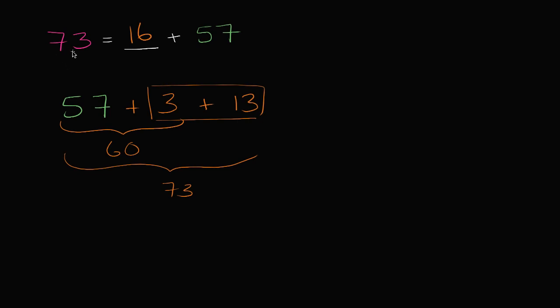Now there's other ways that you could try to tackle it. You could say, look, this blank is the difference between 73 and 57. So you could write this as 73 minus 57 is equal to blank. And this would get you the same value, it would get you 16.